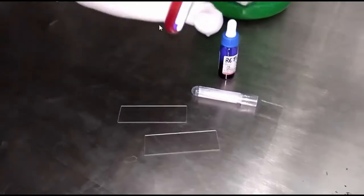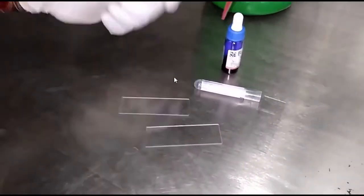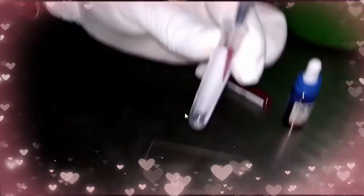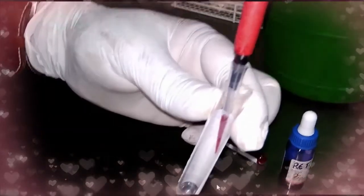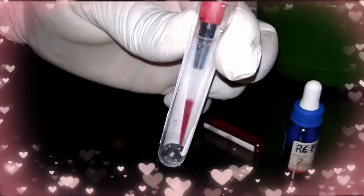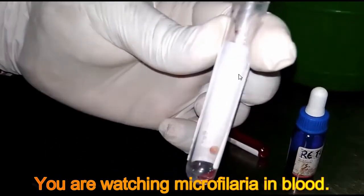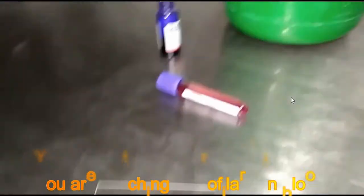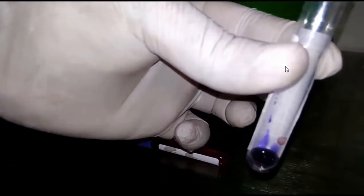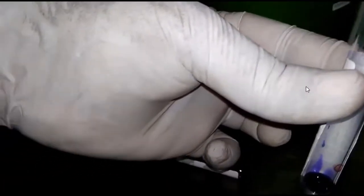This one is EDTA blood. This one is slides, test tube, micropipette, and microscope. So take equal amount of blood and vital stain.